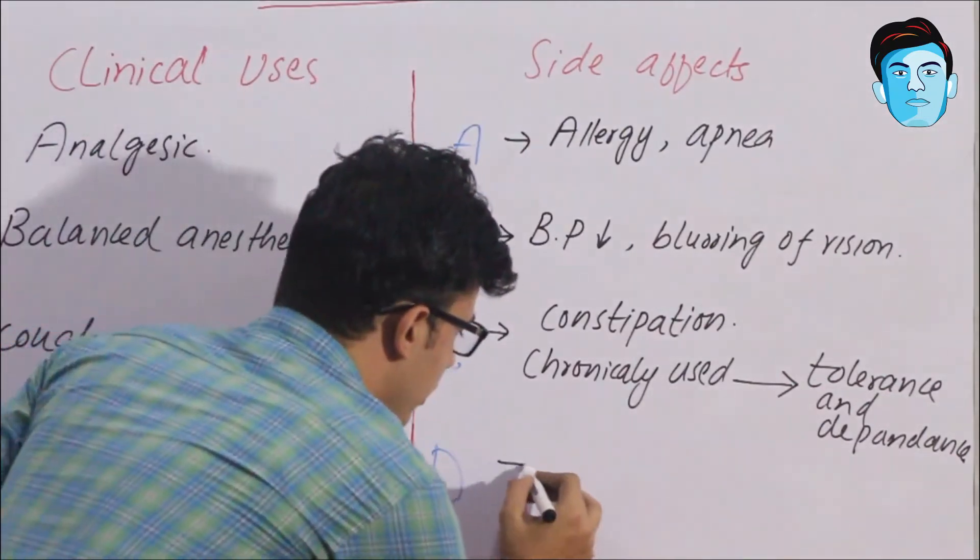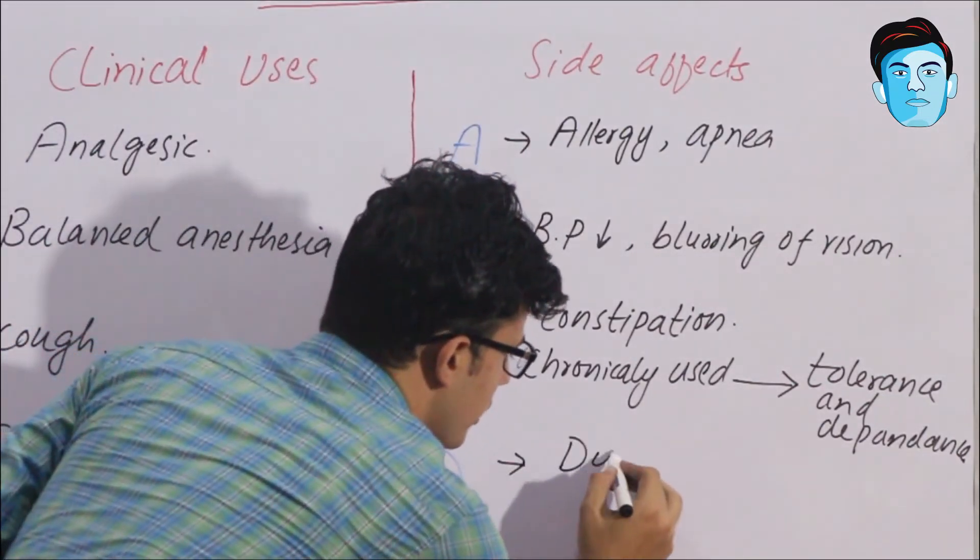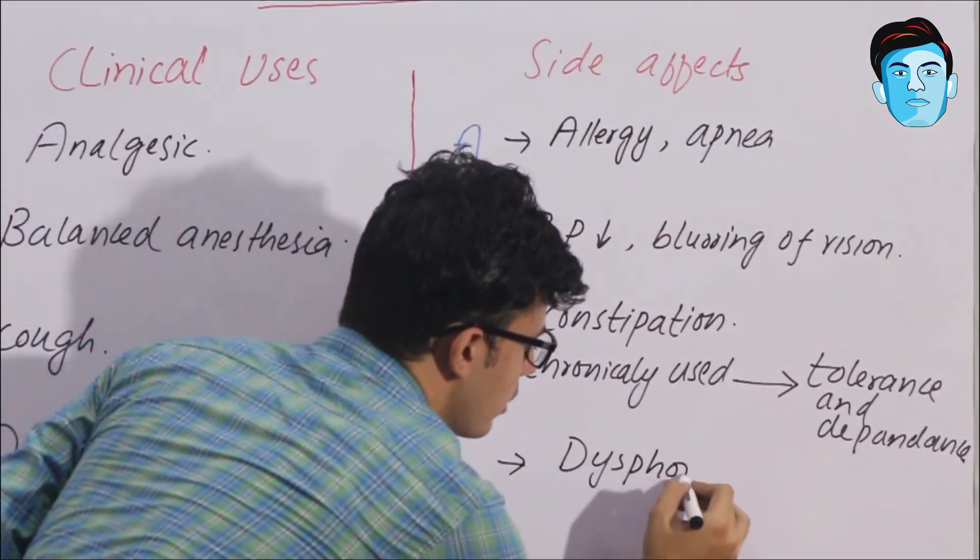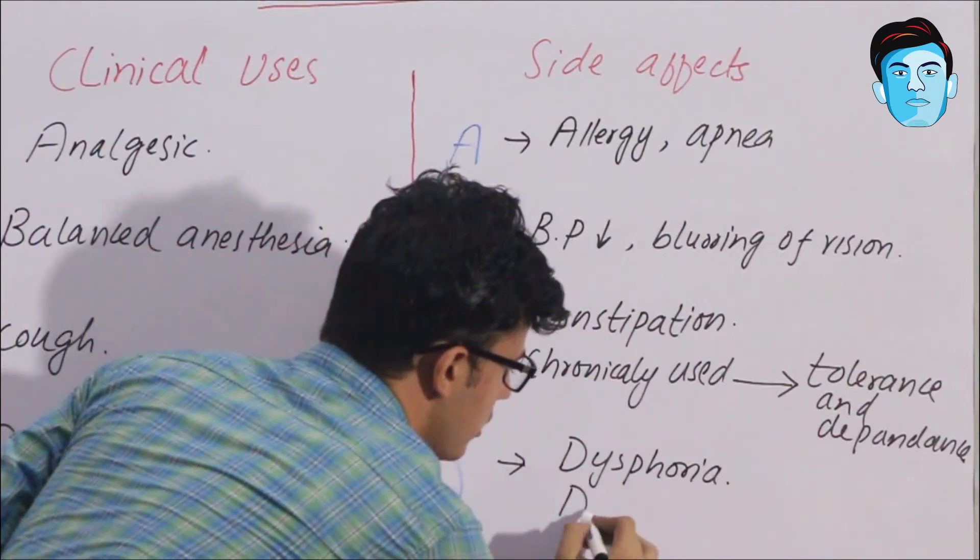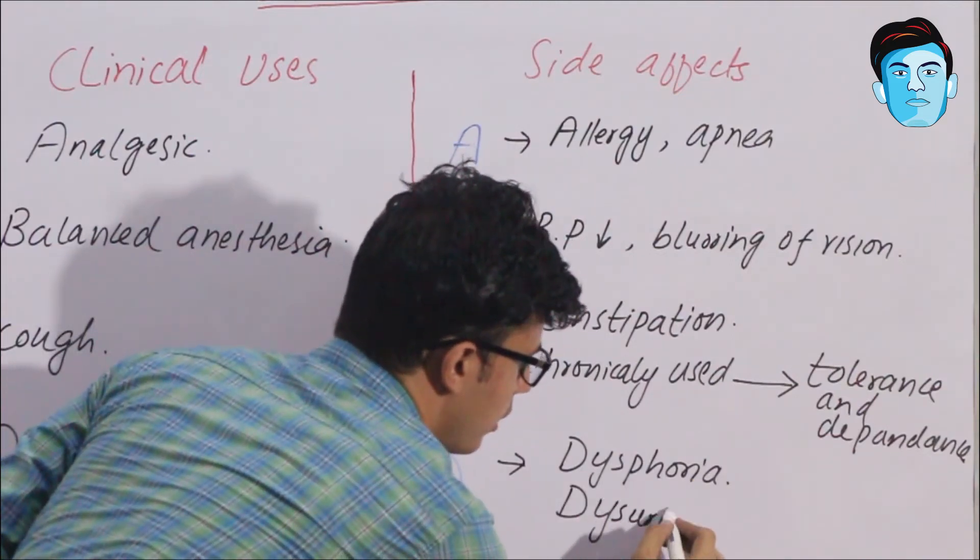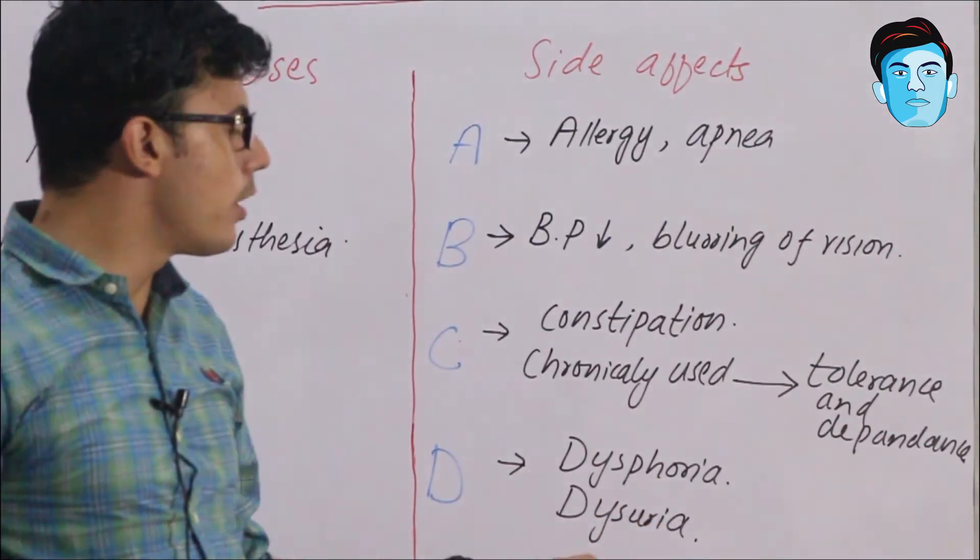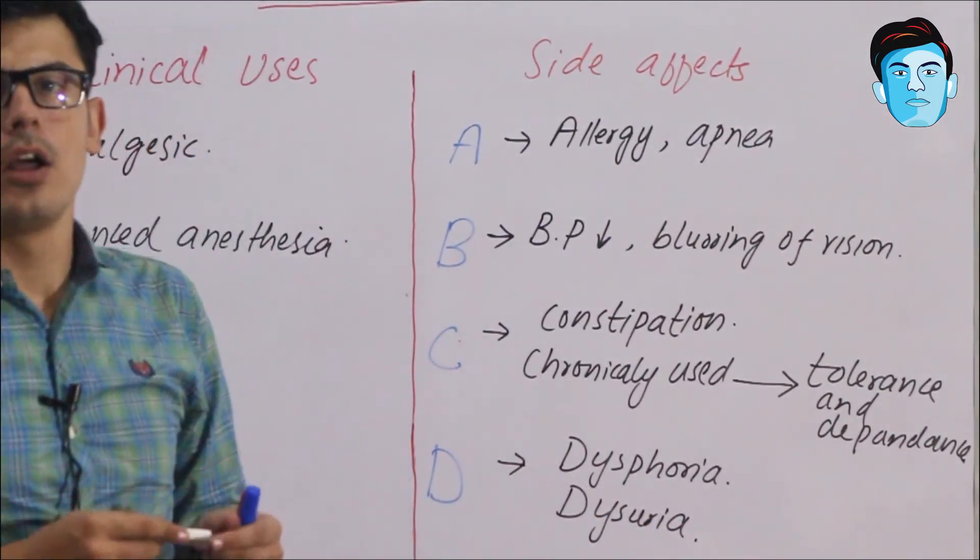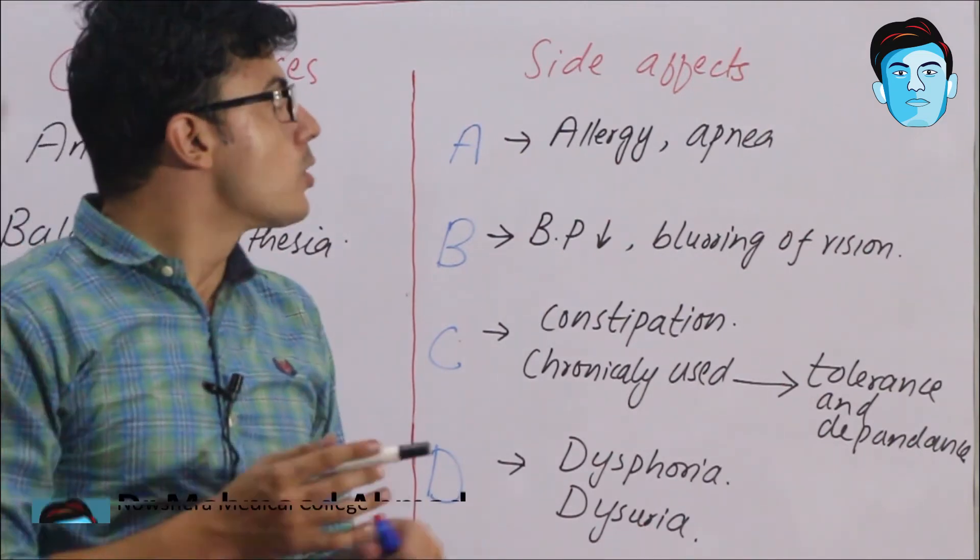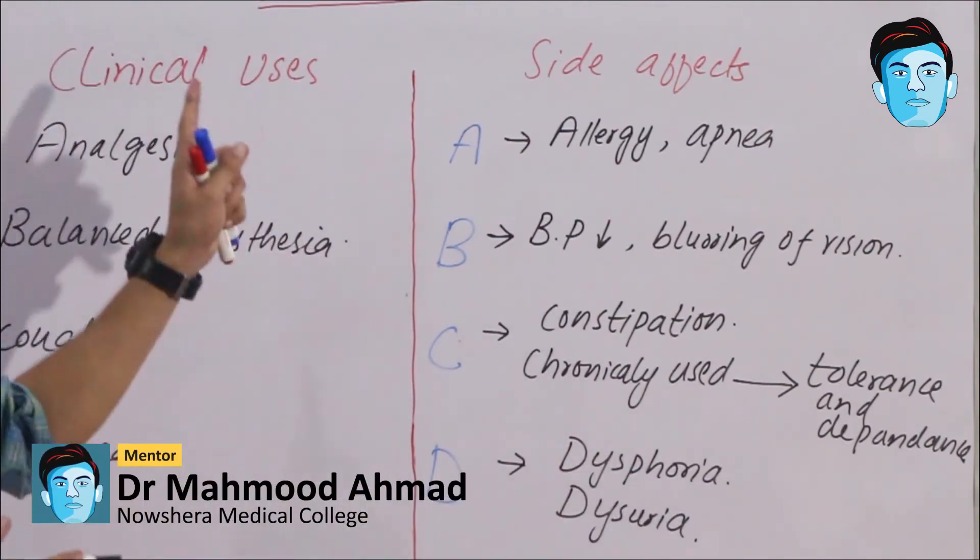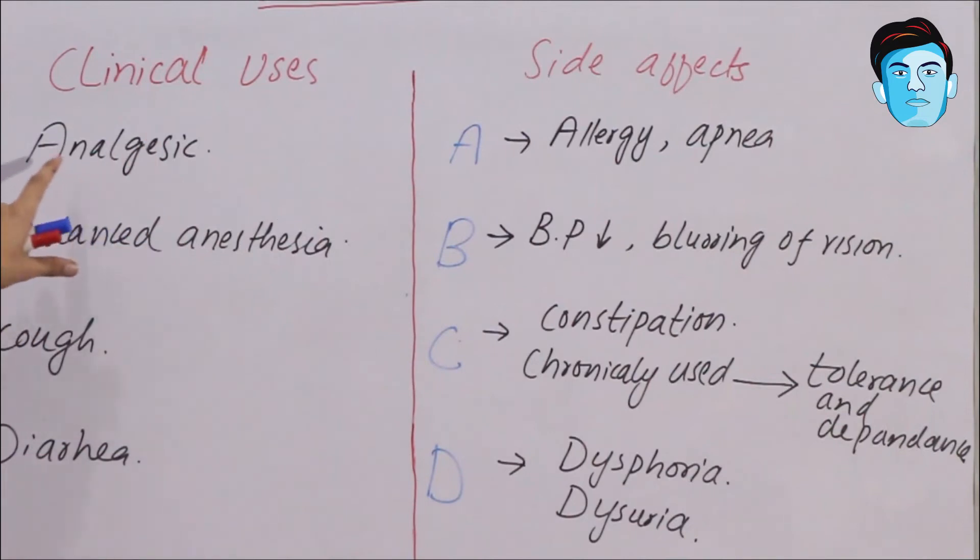D stands for dysphoria and dysuria. Dysphoria means the state of dissatisfaction, where dysuria is feeling of pain during urination.